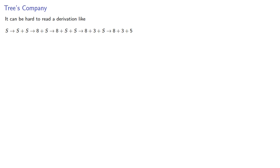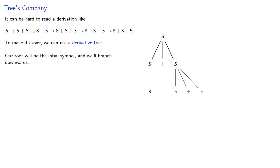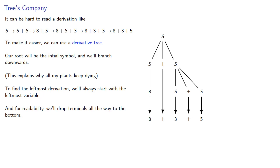Now, it can be hard to read a derivation like this. To make it easier, we can use a derivative tree. Our root will be the initial symbol and will branch downwards. The fact that we consistently refer to things that look like this as trees may explain why all my plants keep dying. To find the leftmost derivation, we'll always start with the leftmost variable. And for readability, we'll drop terminal symbols all the way to the bottom.